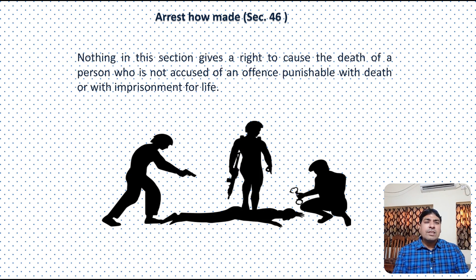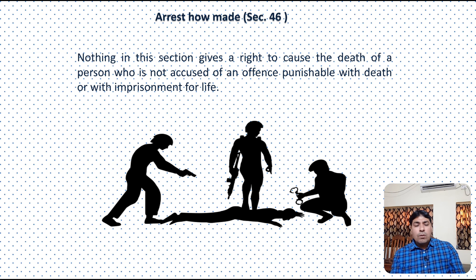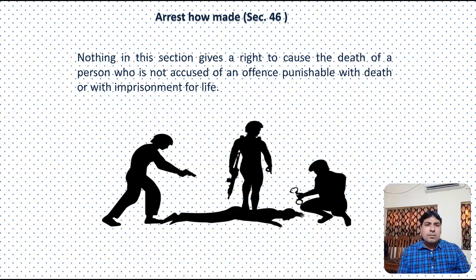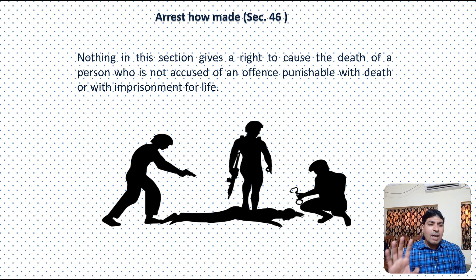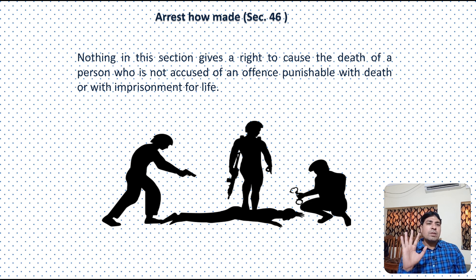Nothing in this section gives a right to cause the death of a person who is not accused of an offense punishable with death or with imprisonment for life. So police cannot cause the death of an accused person if he has not committed any offense for which the punishment is death penalty or life imprisonment. However, if the offense is punishable with death or imprisonment for life, then police have the power to apply force up to causing the death of the accused for the purpose of effecting the arrest.